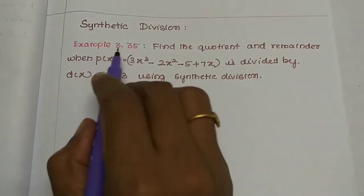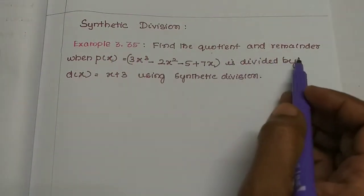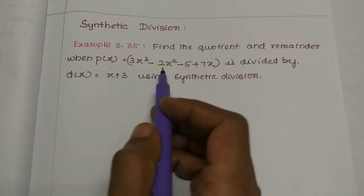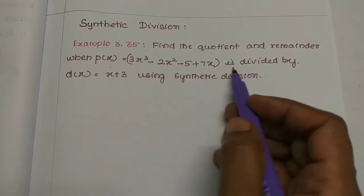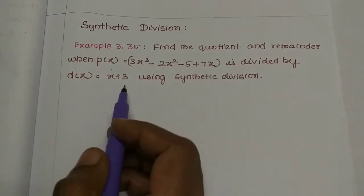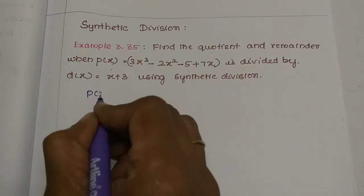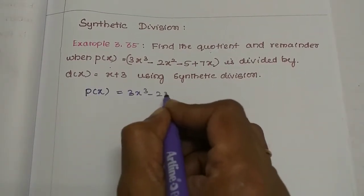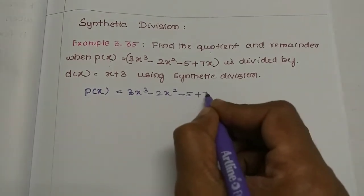Let's talk about Example 3.35. Find the quotient and remainder when p(x) = 3x³ - 2x² - 5 + 7x is divided by d(x) = x + 3. So what do we have for p(x)? It is 3x³ - 2x² - 5 + 7x.